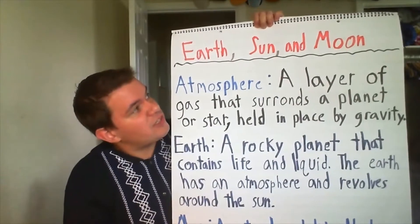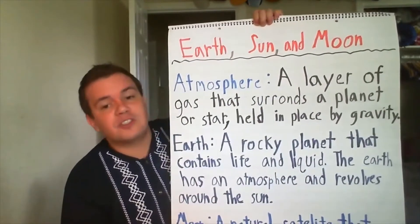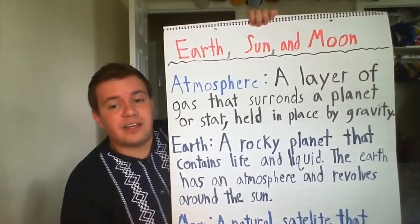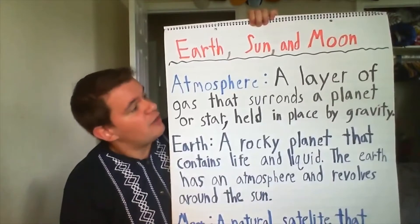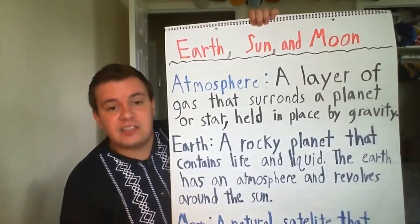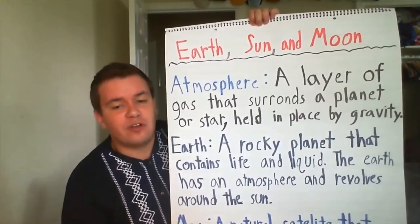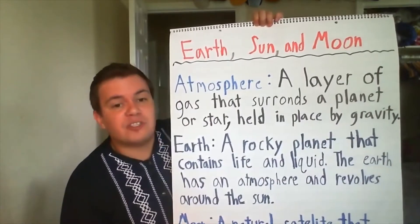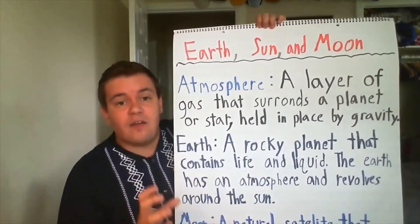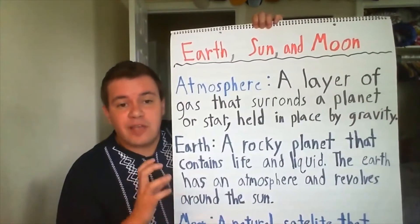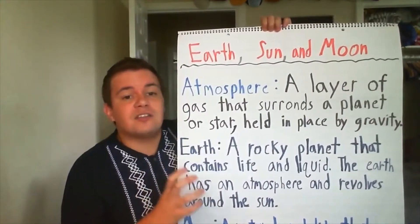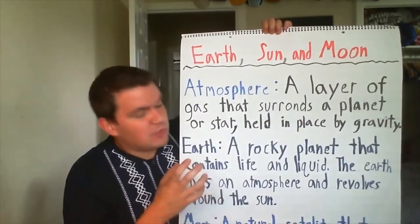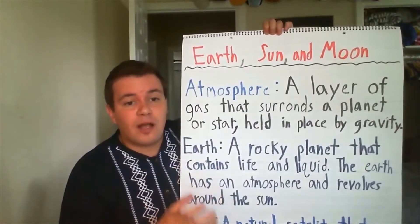Now we're going to discuss the differences between the earth, the sun, and the moon. First off, the earth is a rocky planet that contains life and liquid. The earth has a strong atmosphere and revolves around the sun. What's important to remember is that the earth is solid. Unlike other planets which are made up of gas, the earth is made up of rock and minerals and materials. So that's why we say it's a rocky planet.